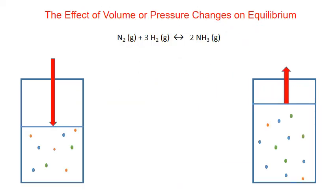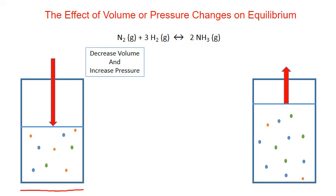Concentration is not the only thing we can change to disturb equilibrium. For gaseous reactions, changing the volume and changing the pressure can have a significant impact on the position of equilibrium. Let's look at the gaseous reaction between nitrogen and hydrogen to produce ammonia gas, and imagine that this gaseous system is contained in a closed piston that can move up or down. Remember that according to Boyle's law, pressure and volume are inversely proportional.